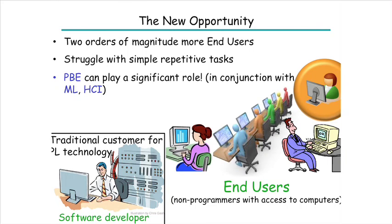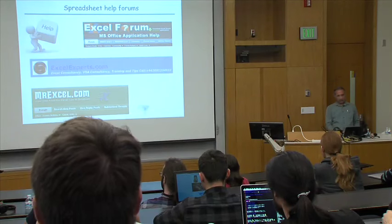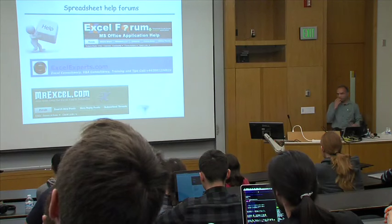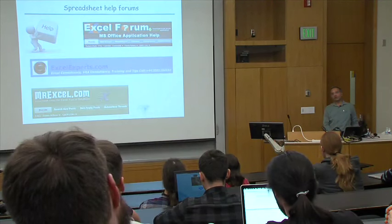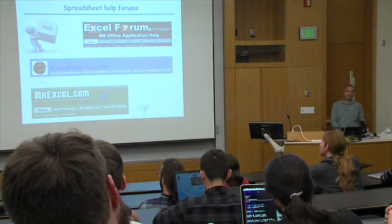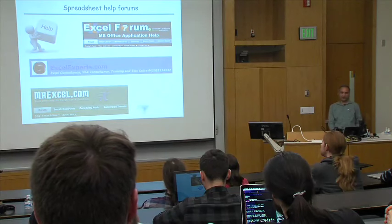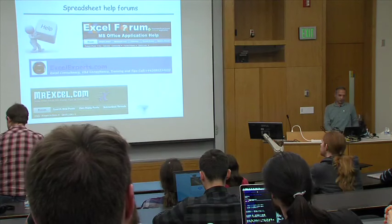This field of programming by examples is a cross-disciplinary field. To build good end-to-end systems, we need contributions not only from programming languages, but also from machine learning algorithms and HCI approaches. In order to figure out what these people are trying to do, I started studying help forums — specifically spreadsheet help forums, since spreadsheets are the most commonly used software in the world.